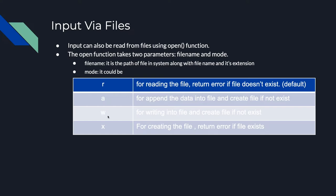W mode is only appropriate if you don't care about the existing data in the file, like if it's a temporary storage location you overwrite on each execution. The X mode can be useful if you need to make sure a file is there and want to know if it already exists — it'll tell you because it returns an error if it does. It's important to know if the file already exists in that use case.